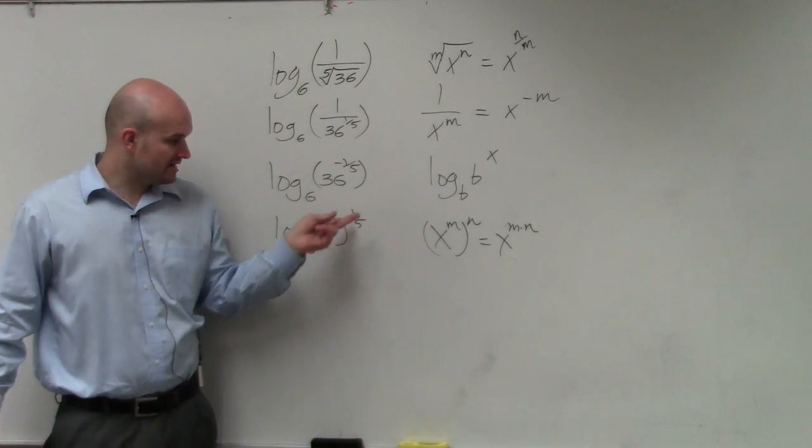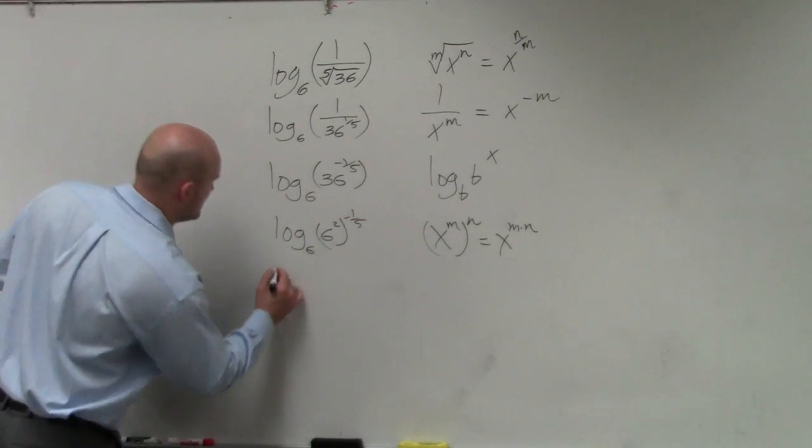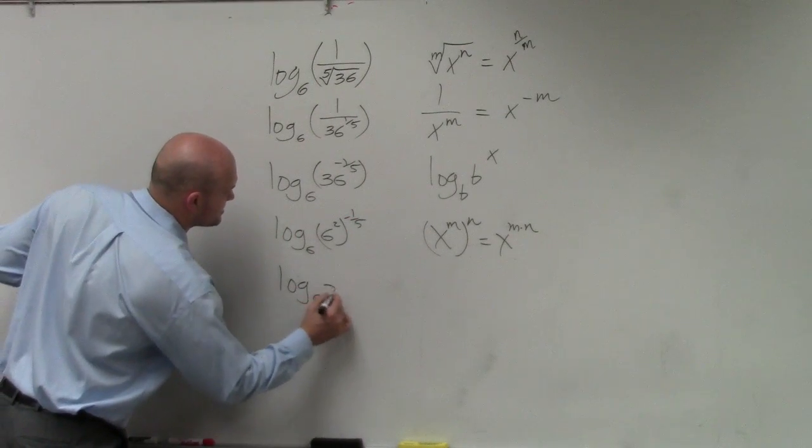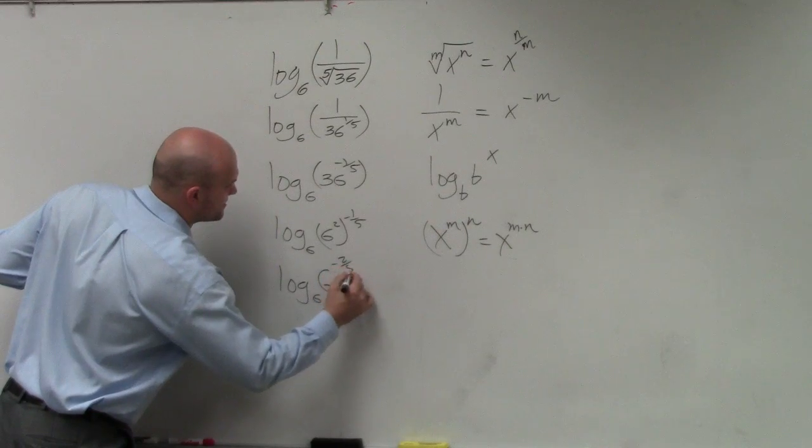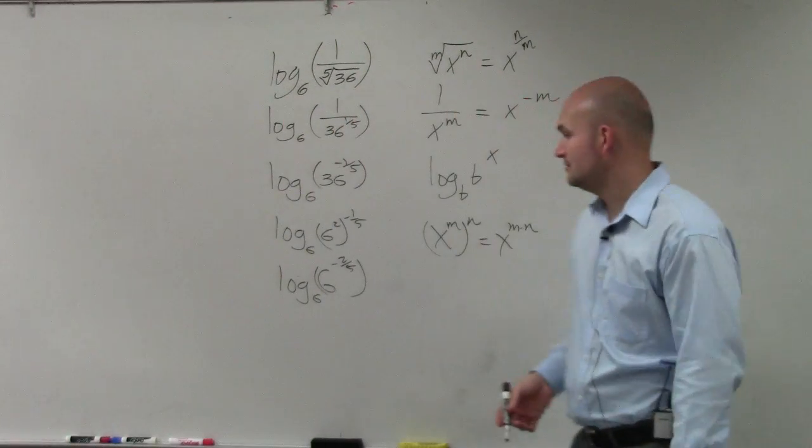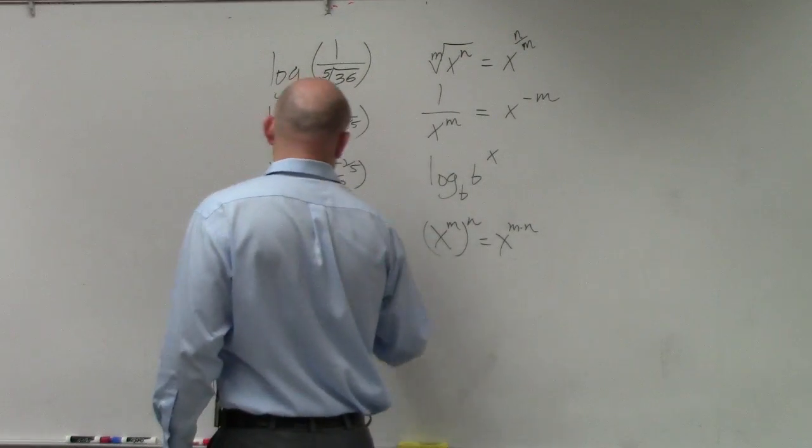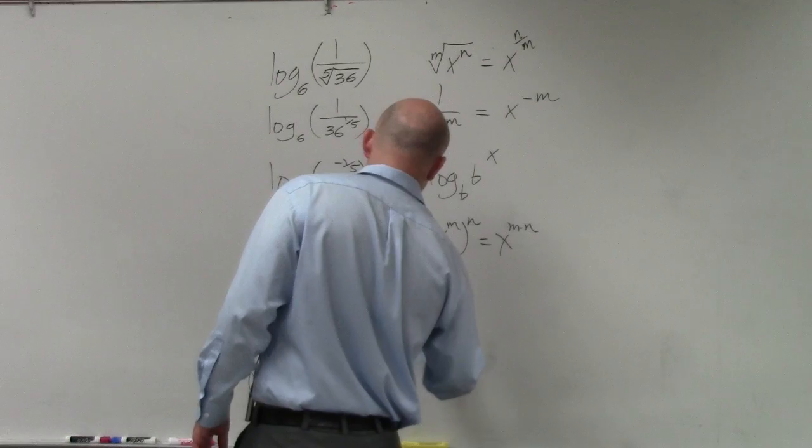So therefore, 6 squared times negative raised to the negative 1-fifth, I'm sorry, is going to be negative 2-fifths. So I have log base 6 of 6 to the negative 2-fifths power. Now, I can get those out, and my answer is negative 2 over 5.